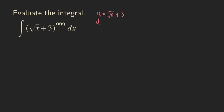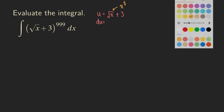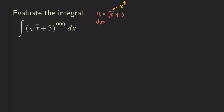Now, what about du? The du is the derivative of this function. This square root of x can be written as x to the one-half. So using the power rule, we get 1/2 times x to the negative one-half, and then the plus 3 disappears. Then we get dx.